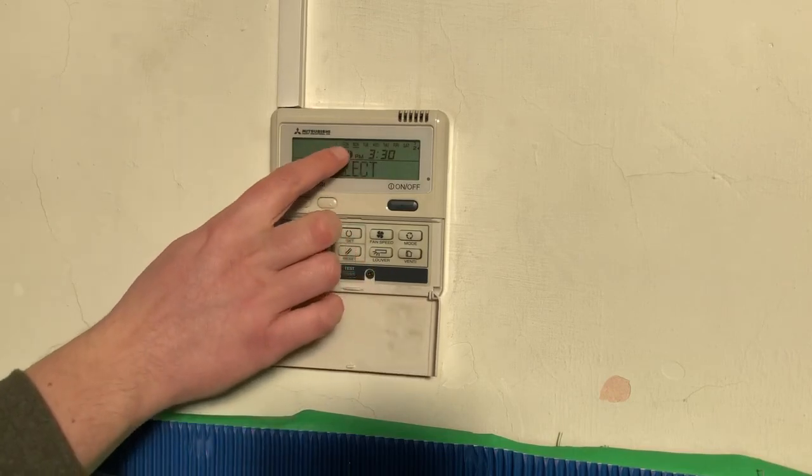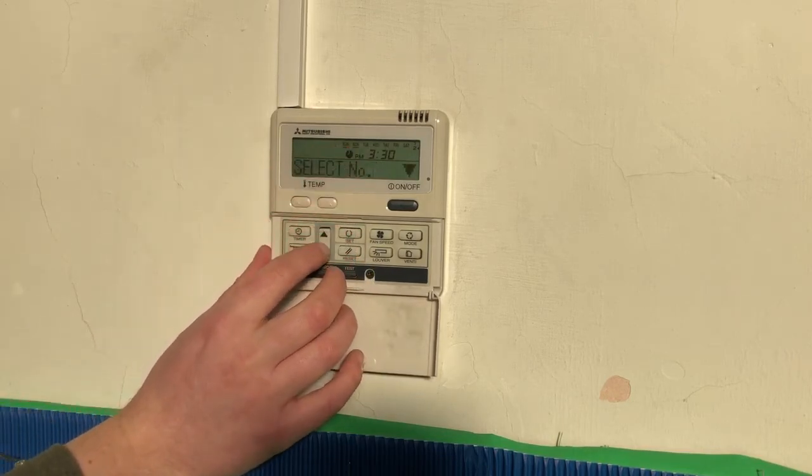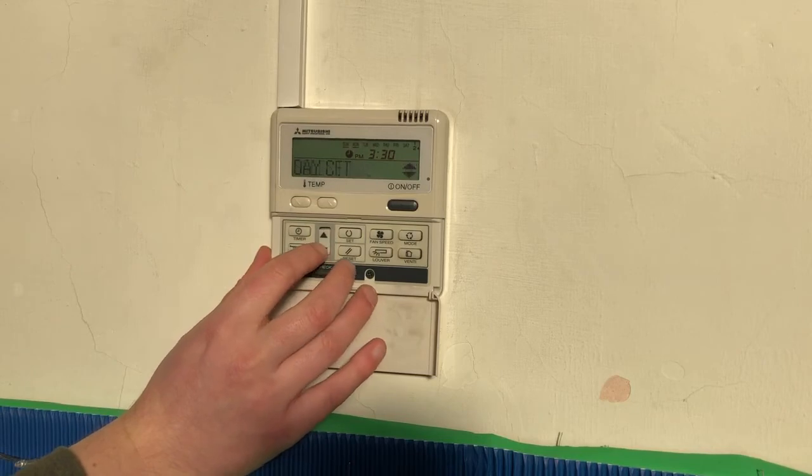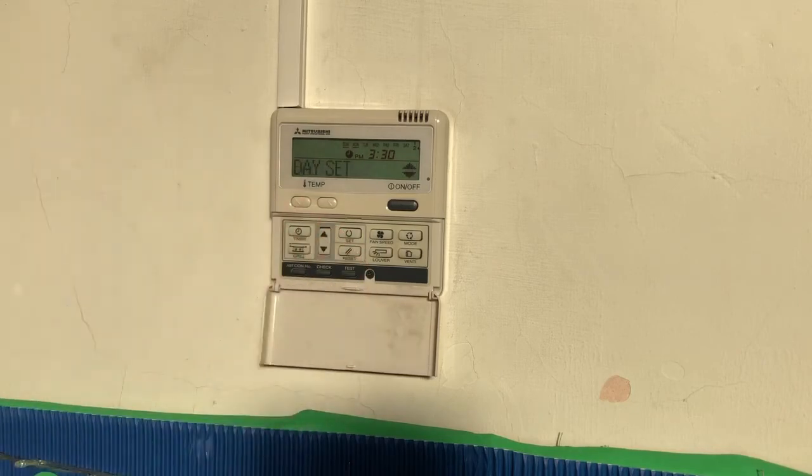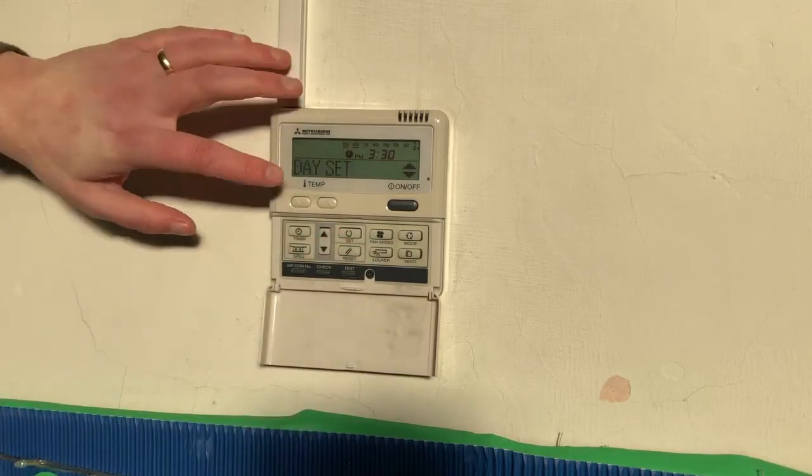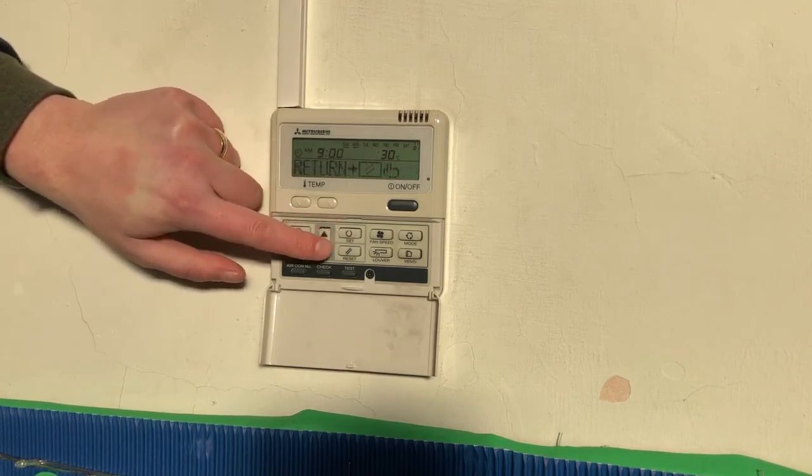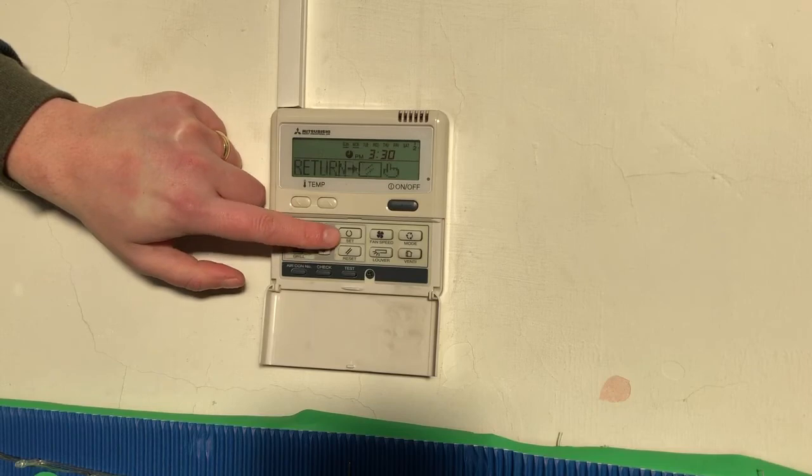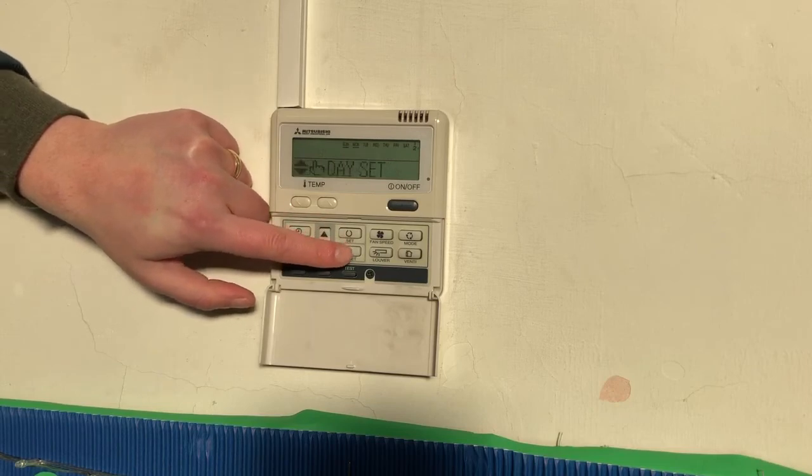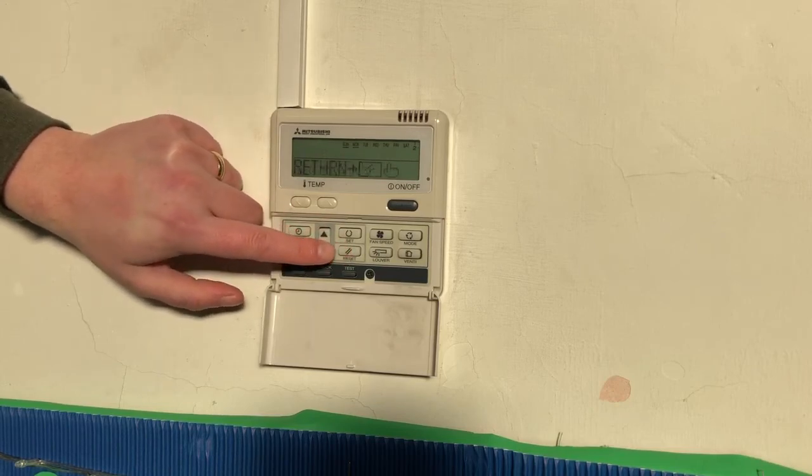Okay. So now I've set on Monday and you can see it's underlined there now so that we can see that there is a timer there. So there is a timer set on Monday to go on at nine o'clock and to go off at 3:30. Okay. So we scroll down here.